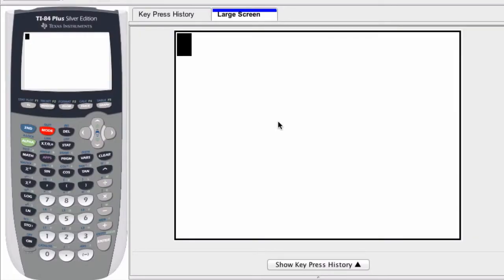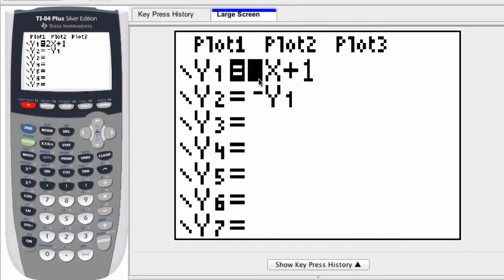You can enter multiple functions on your graphing calculator on the y equals editor. When you type them in and press enter, they're automatically selected.